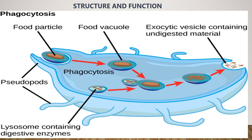Structure of protists — cellular organization. They can either be unicellular or multicellular. For the unicellular, examples include the amoeba, the paramecium, and the euglena. For the multicellular, they include the algae and the slime mold.